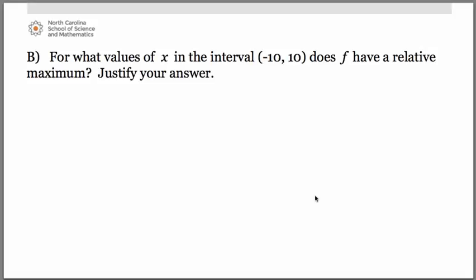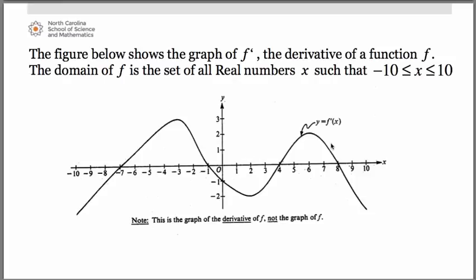The second question asked students to determine the values of x in the interval from negative 10 to 10 where the original function f has a relative maximum. Think about how a relative maximum comes to be: if we have a relative maximum, the slope is changing from positive on the left to negative on the right. On the derivative graph, that means f prime is positive to the left and negative to the right. We want to find where that happens on the derivative graph.